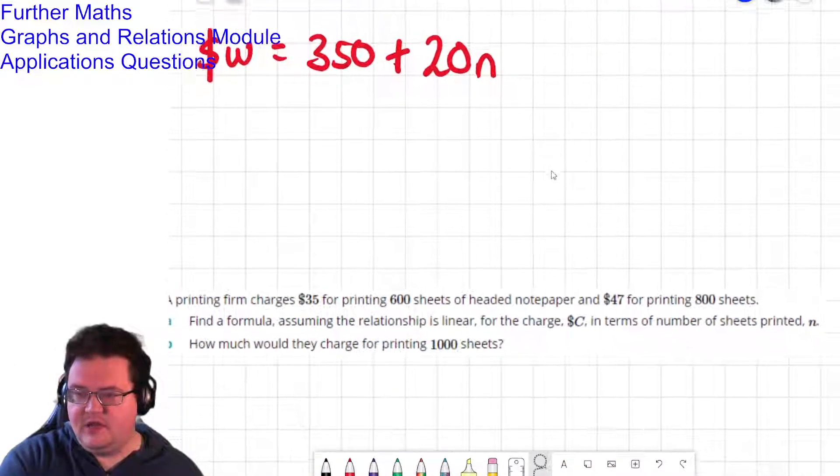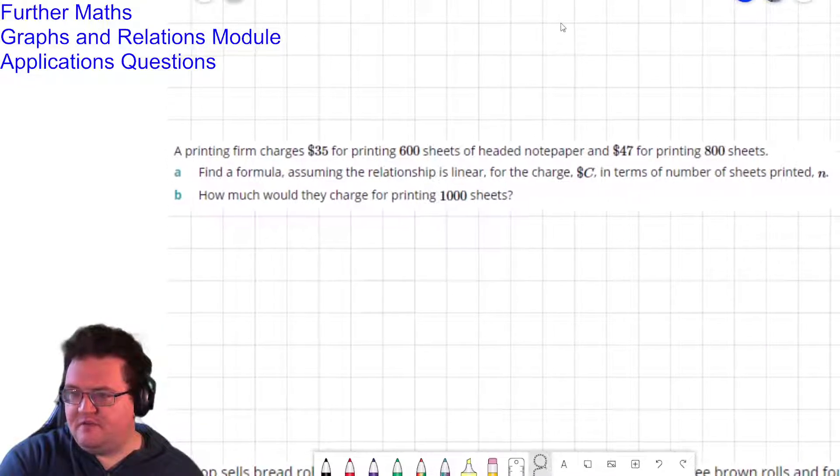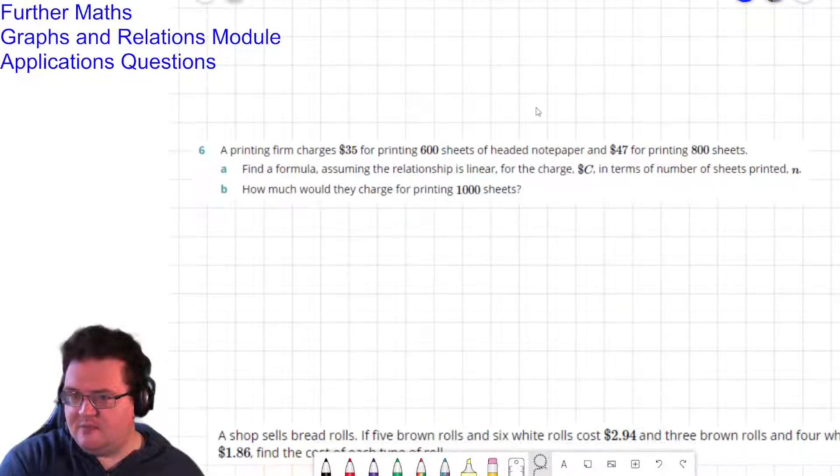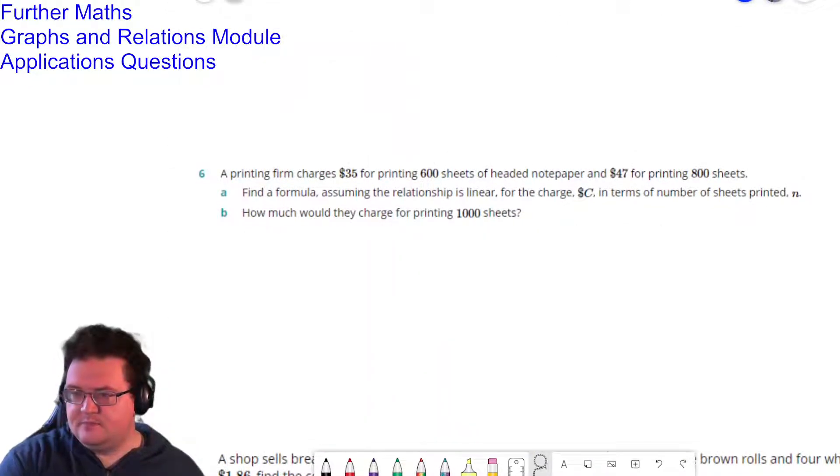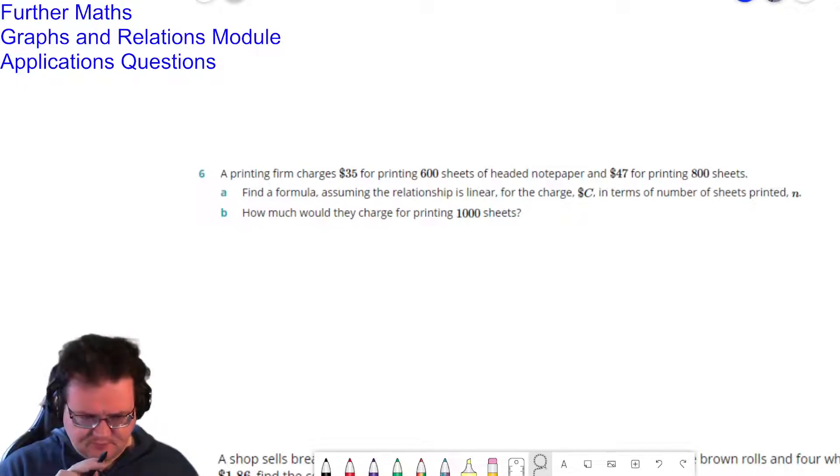So a printing firm charges $35 for printing 600 sheets of headed notepaper and $47 for printing 800 instead. Find a formula assuming the relationship is linear for the charge in terms of the sheets, numbers printed. So the question is, what is the gradient of this scenario here? Because I have two pieces of information that I can represent as coordinates on a linear graph.